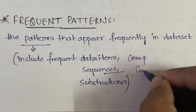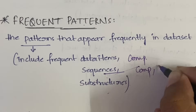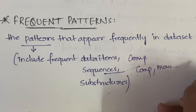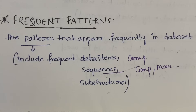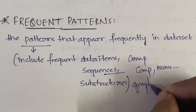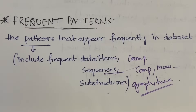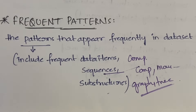A data item is a single item like a computer. A sequence is something like: first buying a computer, then buying a mouse, then a keyboard — that repeating sequence is a frequent subsequence. A substructure can be a graph or any structure that always repeats — those are frequent substructures. Data items, subsequences, and substructures that occur frequently are called frequent data items, frequent subsequences, and frequent substructures respectively.